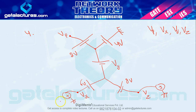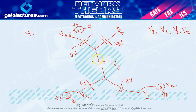Vp को भी plus-minus extend करो — minus = ground। अब KVL का close loop concept समझें: ground से start करो, दूसरे ground पर पहुंचो — यही close loop है। जब दोनों ends ground हों, तो ground-to-ground KVL apply कर सकते हैं।